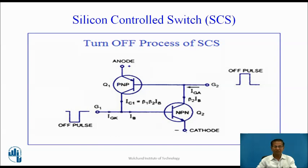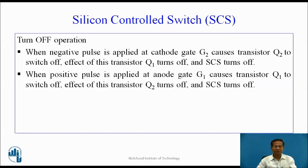Turn off process of SCS: To turn off SCS, apply a negative-going trigger pulse to the cathode gate or a positive-going trigger pulse to the anode gate. When a negative pulse is applied at cathode gate G2, it causes transistor Q2 to switch off; as a result transistor Q1 turns off and SCS turns off. When a positive pulse is applied to anode gate G1, it causes transistor Q1 to switch off; as a result transistor Q2 turns off and SCS turns off.